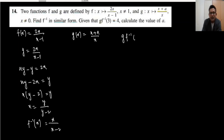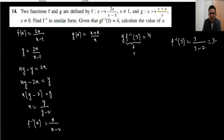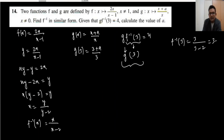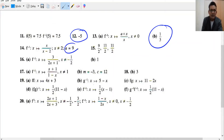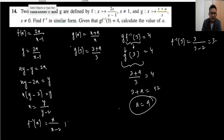Now f⁻¹(3) = 3/(3-2) = 3. Substituting into g: g(3) = (3+a)/3 = 4, so 3+a = 12, giving a = 9. Also note x ≠ 2 in f⁻¹ since that would make the denominator zero. We have done question number 14 with a = 9.